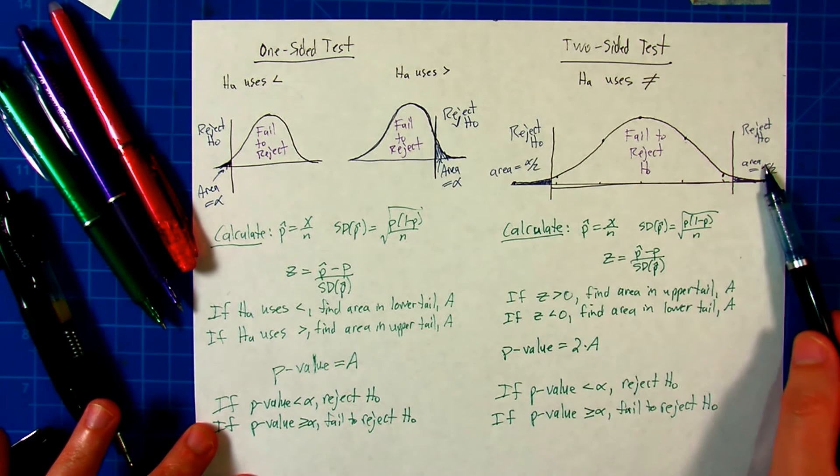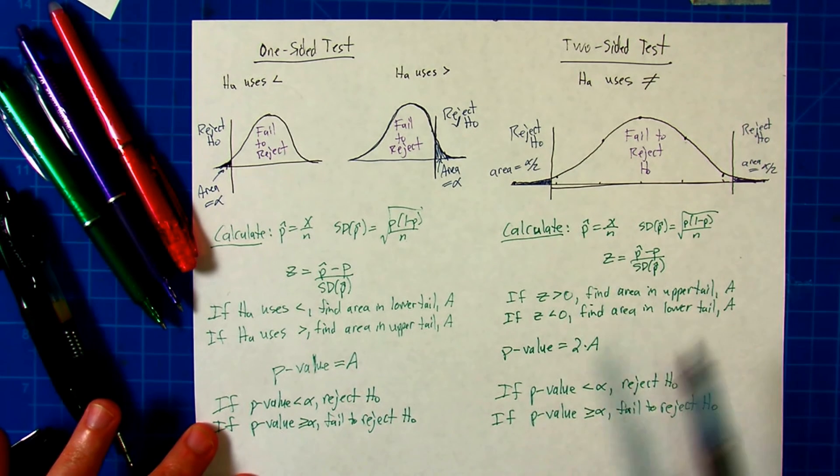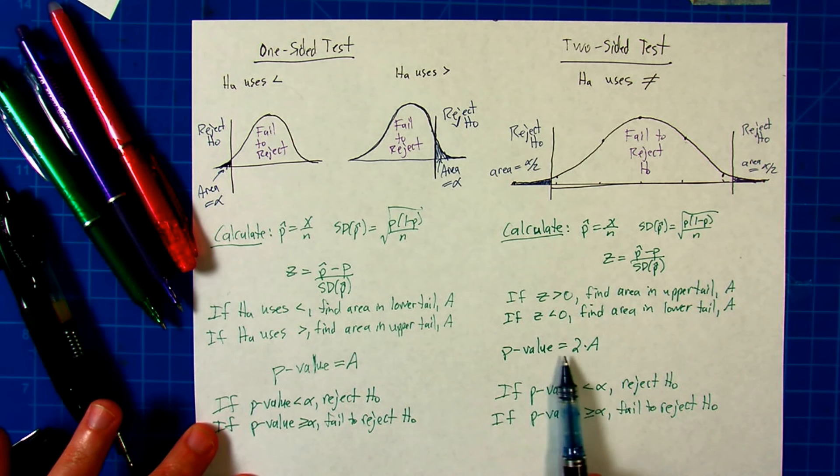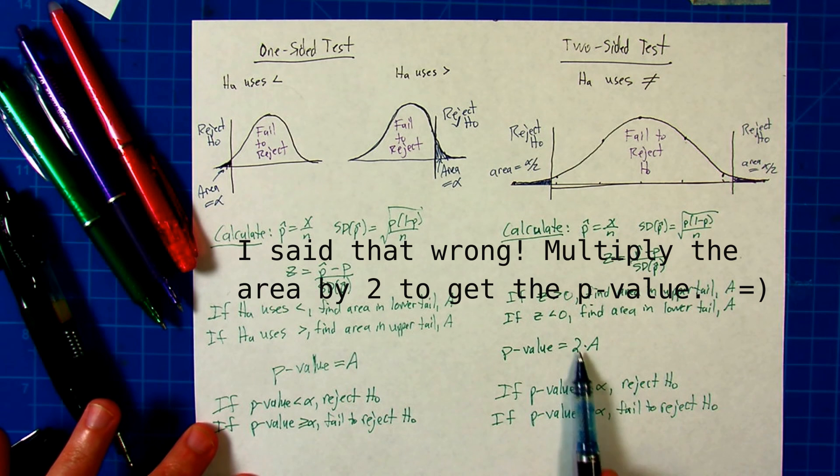But here, we had to split alpha over two and alpha over two. So the correction we make is just multiply the p-value times twice the area, then you can just compare it to alpha directly.